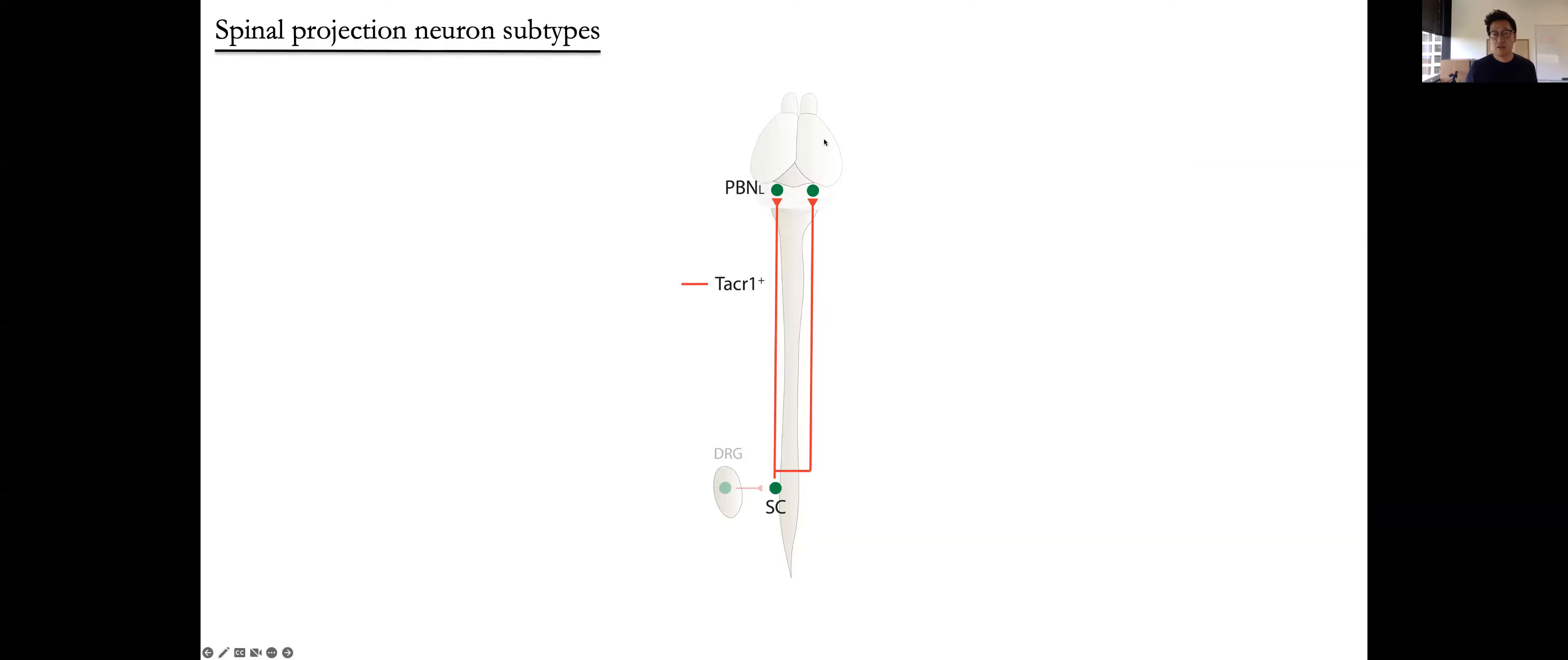However, therapeutic strategies in humans that target these neurons and also the substance P-receptor itself to treat pain have not been successful, suggesting that there exists additional TACR1-negative projection neurons that also convey pain signals to the brain.